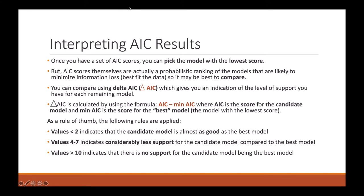Delta AICC is calculated by using the formula AIC minus min AICC, where AICC is the score for the candidate model and min AICC is the score for the best model, which is the model with the lowest score.